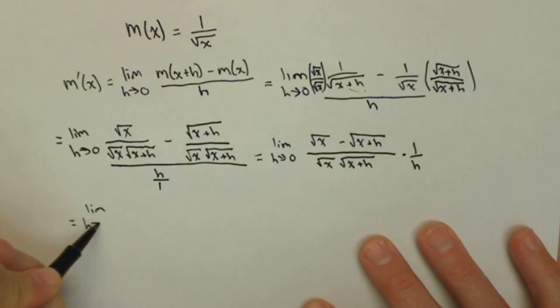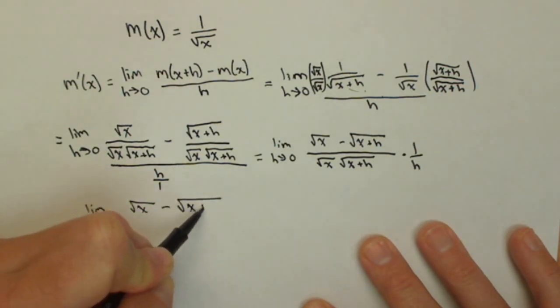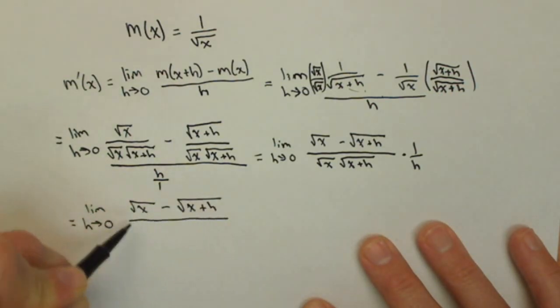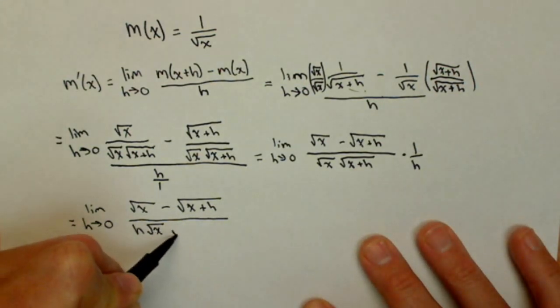And then we'll see how we can get rid of the square roots on top. So, I have square root of x minus square root of x plus h over h square root of x, square root of x plus h.